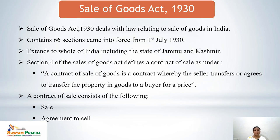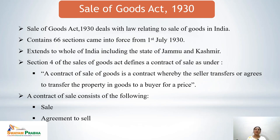Section 4 of the Sale of Goods Act 1930 defines a contract of sale as a contract whereby the seller transfers or agrees to transfer the property in goods to a buyer for a price. There are various components of a contract of sale. Under Section 4, a contract of sale consists of either a sale or an agreement to sell.